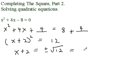We can make this a little simpler. 12 is 4 times 3, so I can take a 2 out, square root of 3. Now I solve for x proper, and I get x equals negative 2 plus or minus 2 times the square root of 3.